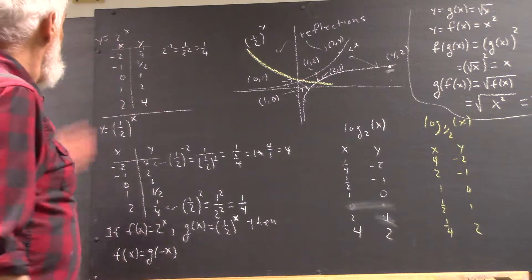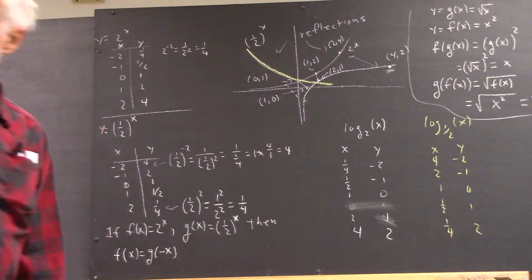Now we're asked to graph y equals 2 to the x and y equals 1 half to the x.